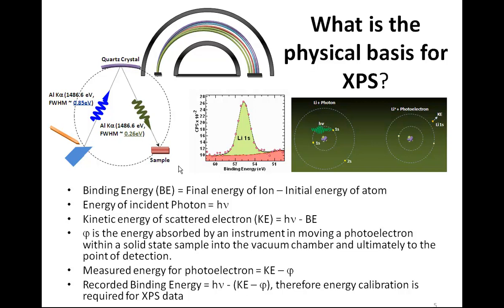In addition to this instrumental factor, the sample itself may be charged positively or negatively, so there are retarding or accelerating fields that act on these electrons and cause an offset in the kinetic energy recorded. This means we must calibrate the instrument in terms of its work function, and we may also need to calibrate for what the sample is contributing. So the binding energy we record is not an absolute value — it is a relative value, and should be treated as such when we interpret peaks and chemical state.